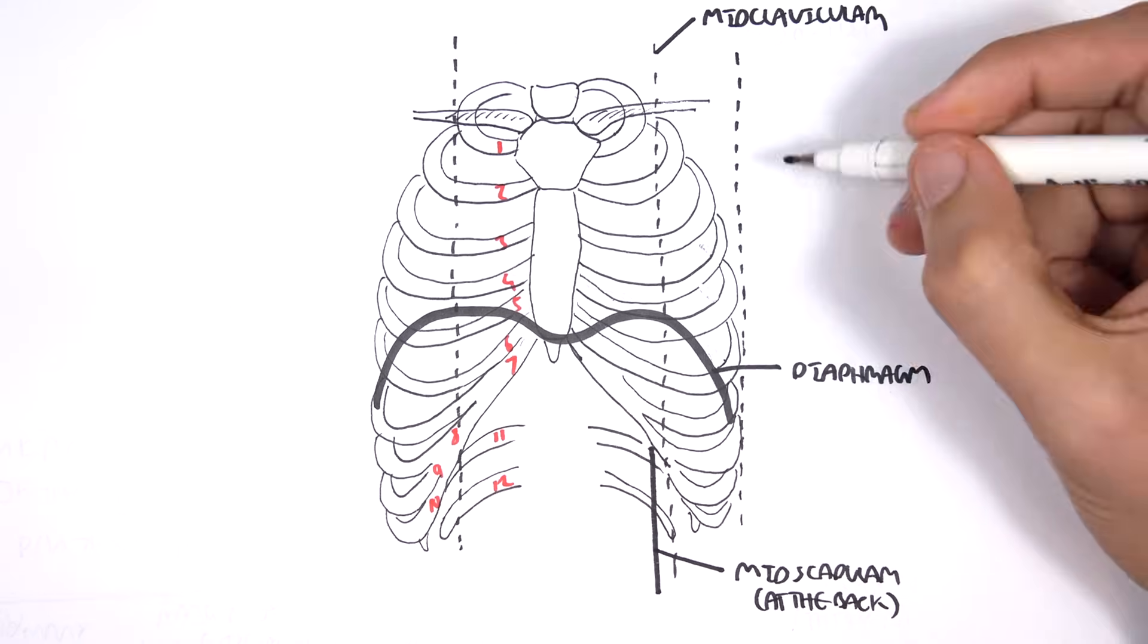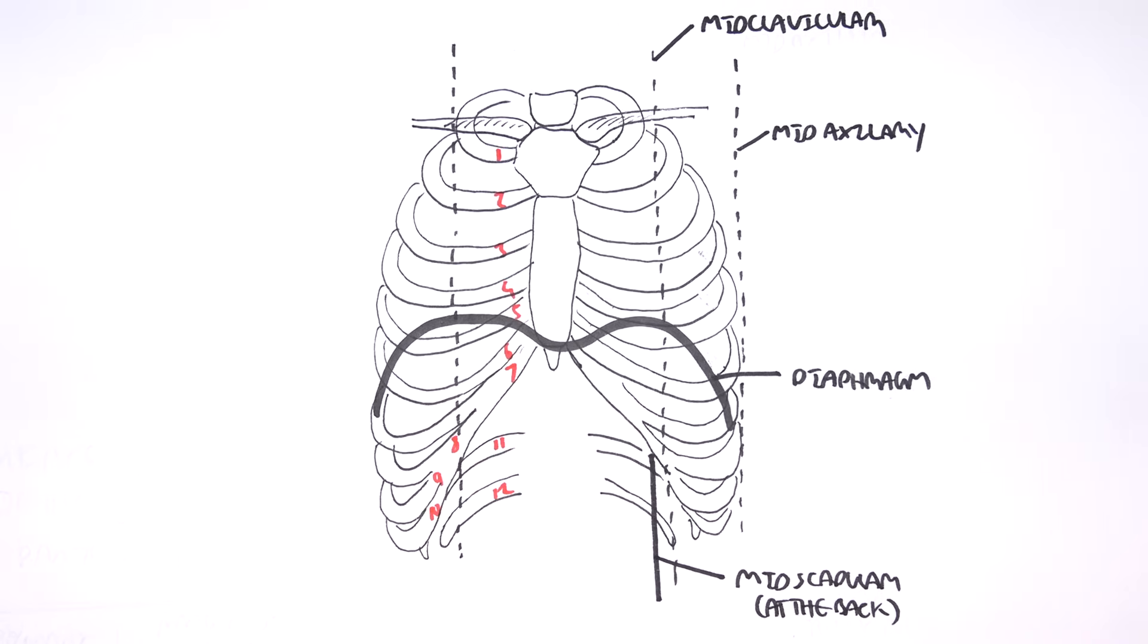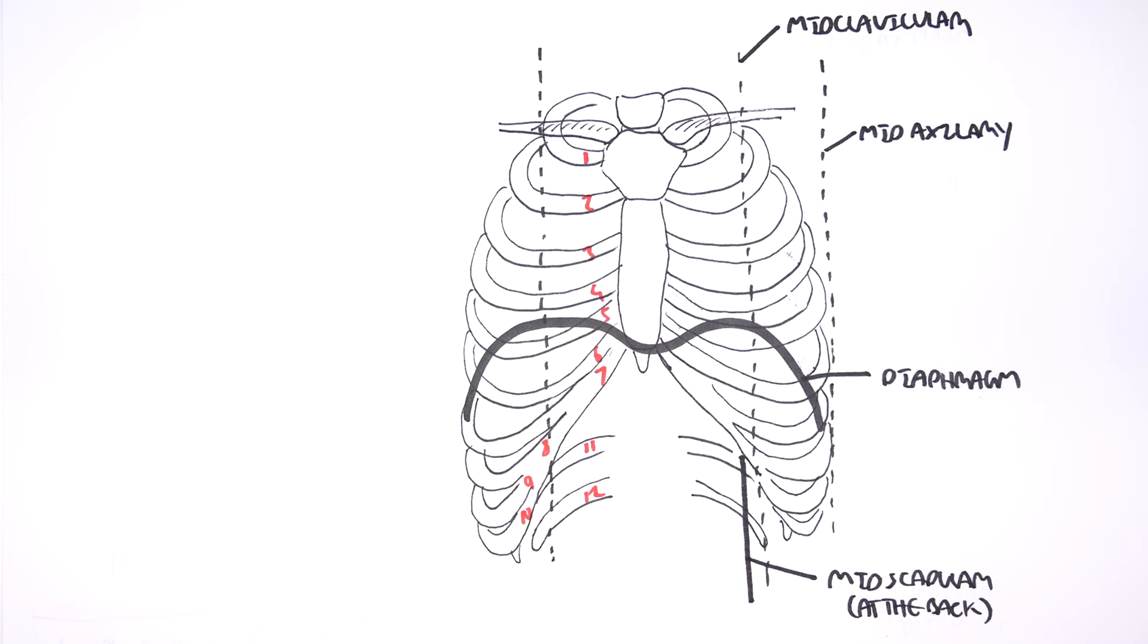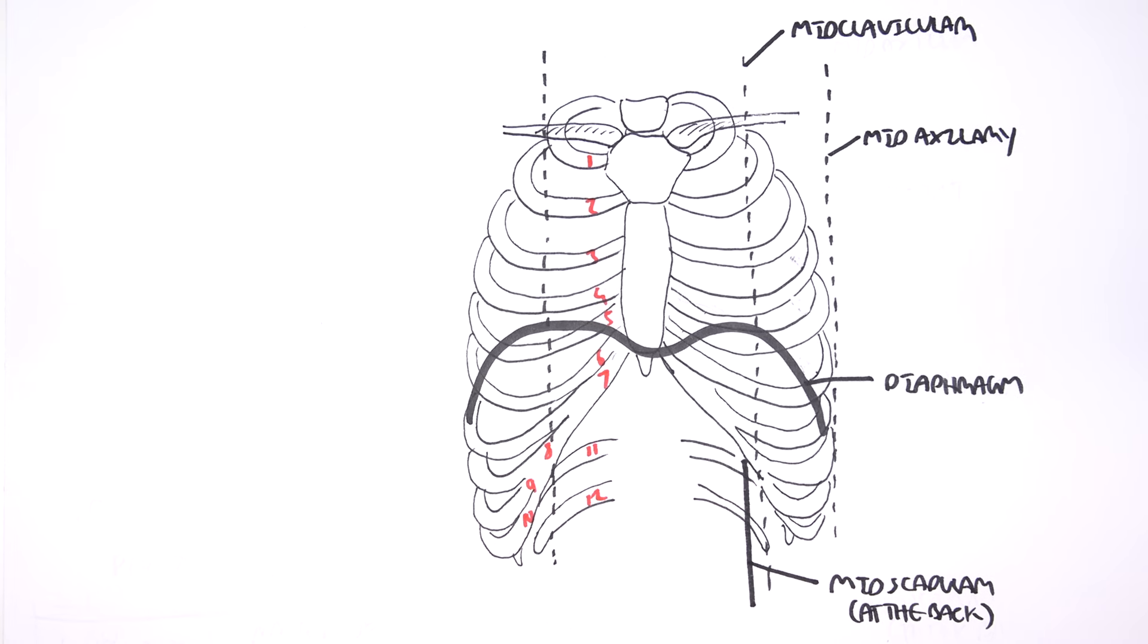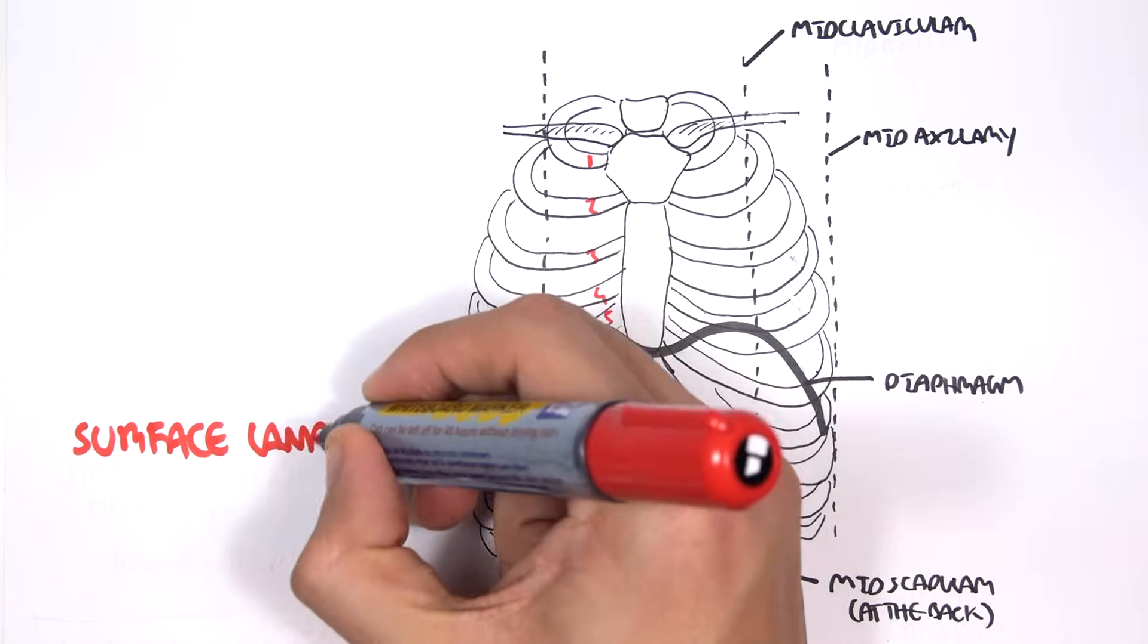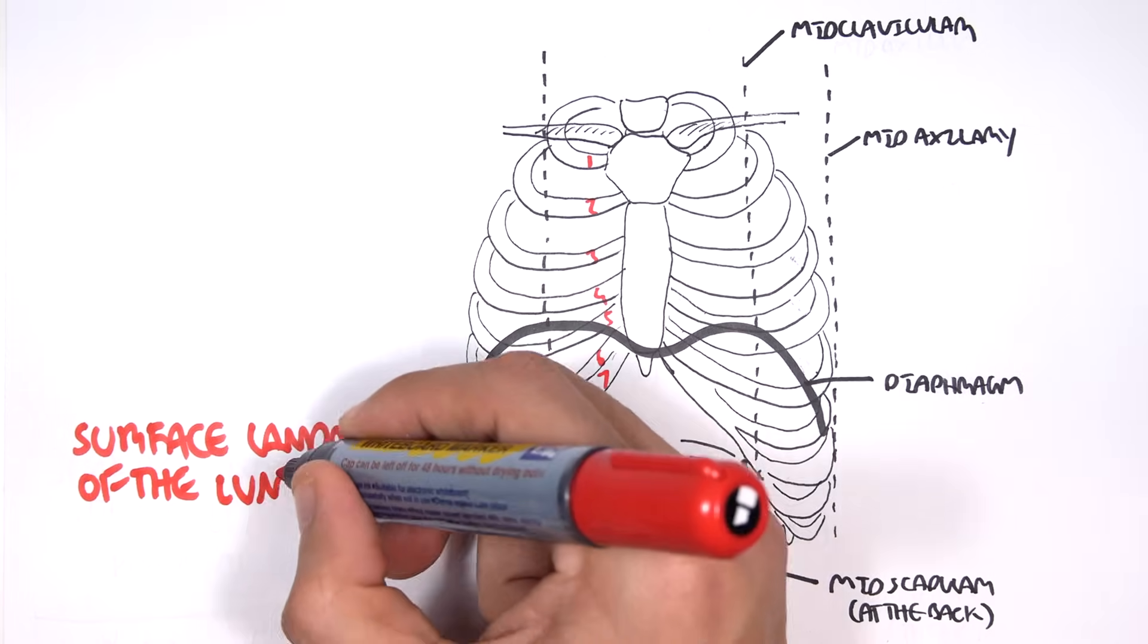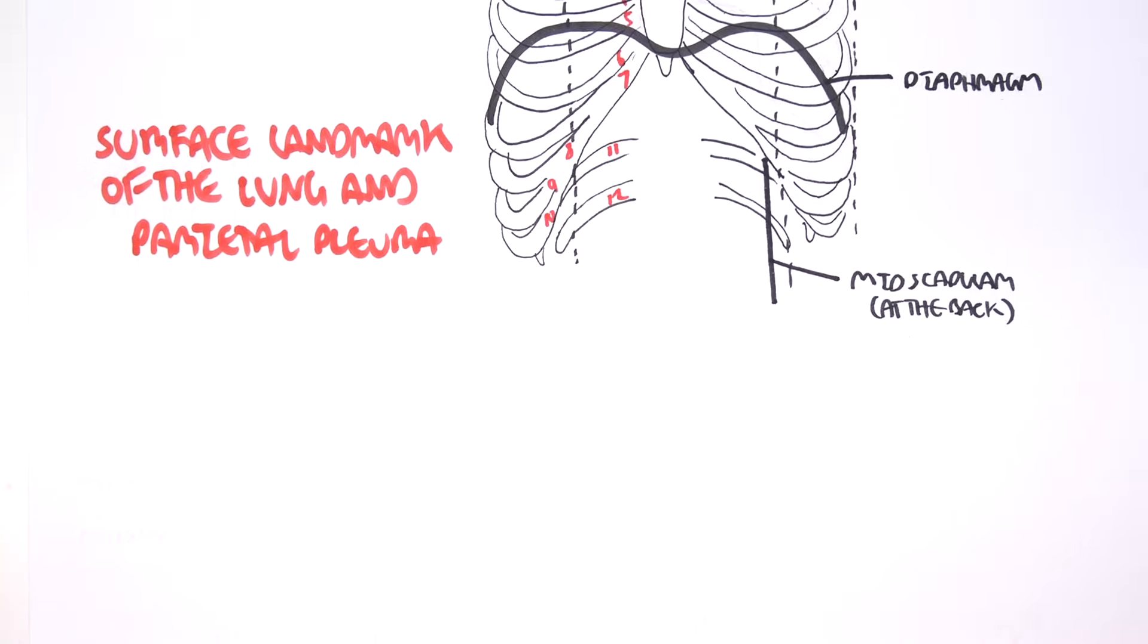These landmarks are important to know because of several reasons. One of which is to help identify where the lung sits in respect to the thoracic cavity, and also the pleural flow or the pleura itself. So next let's talk about the surface landmarks of the lung, of the lung itself, and also the parietal pleura.